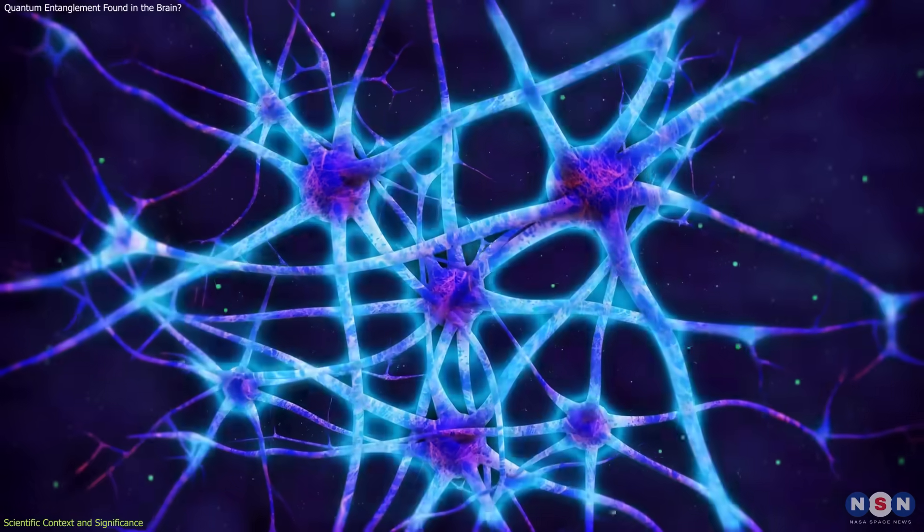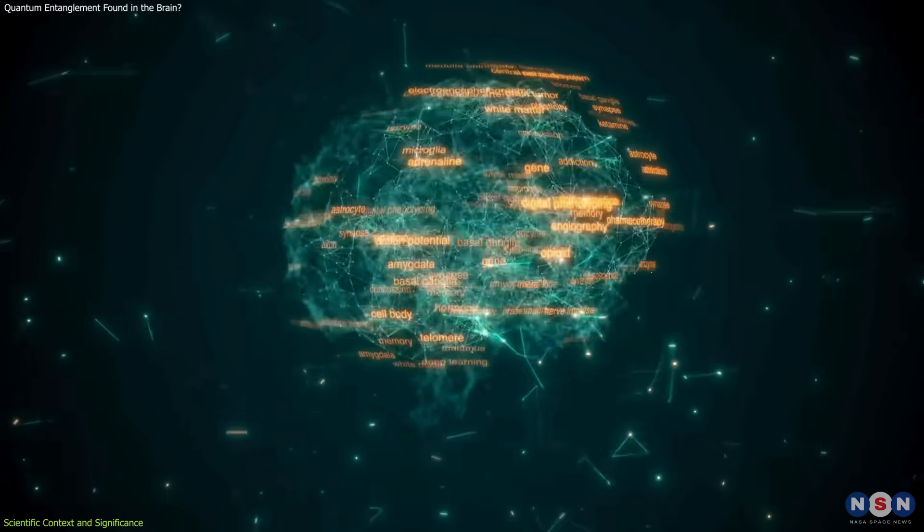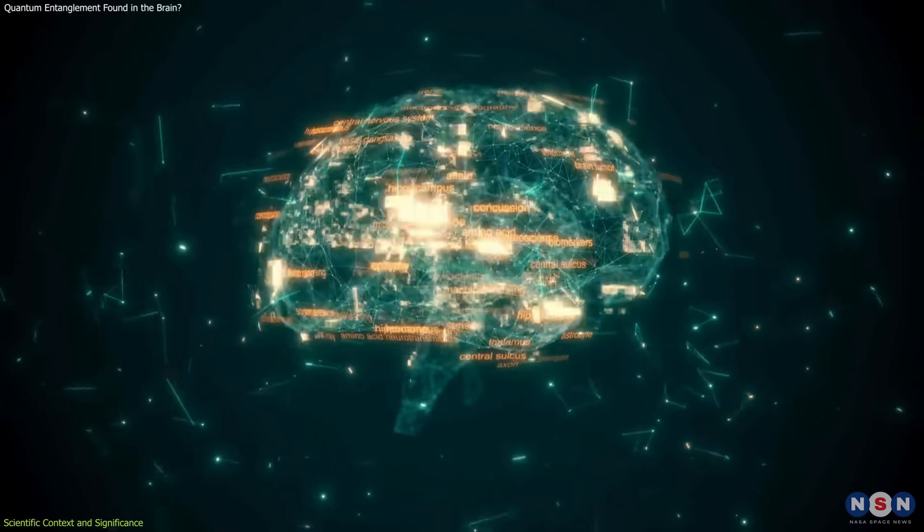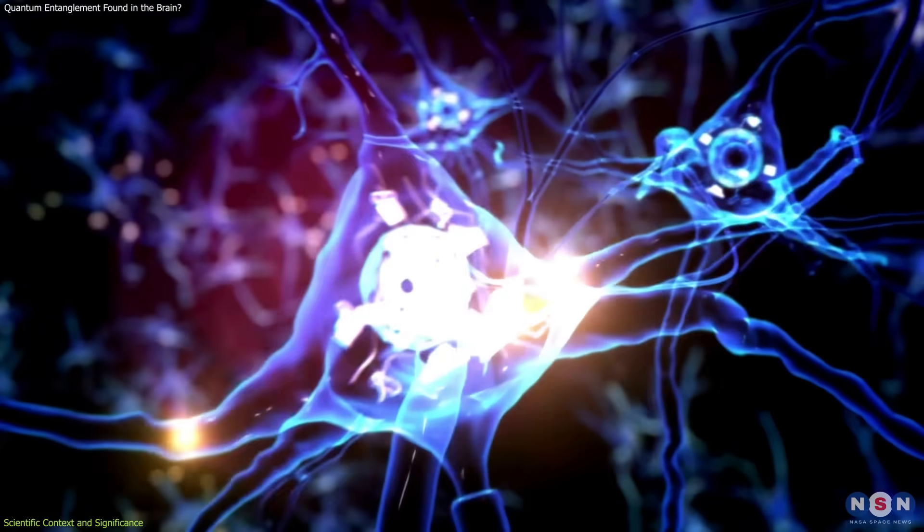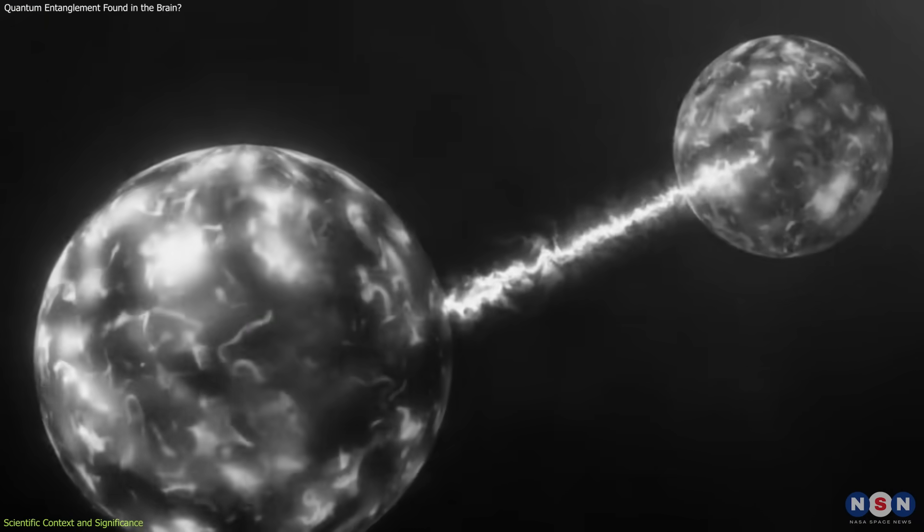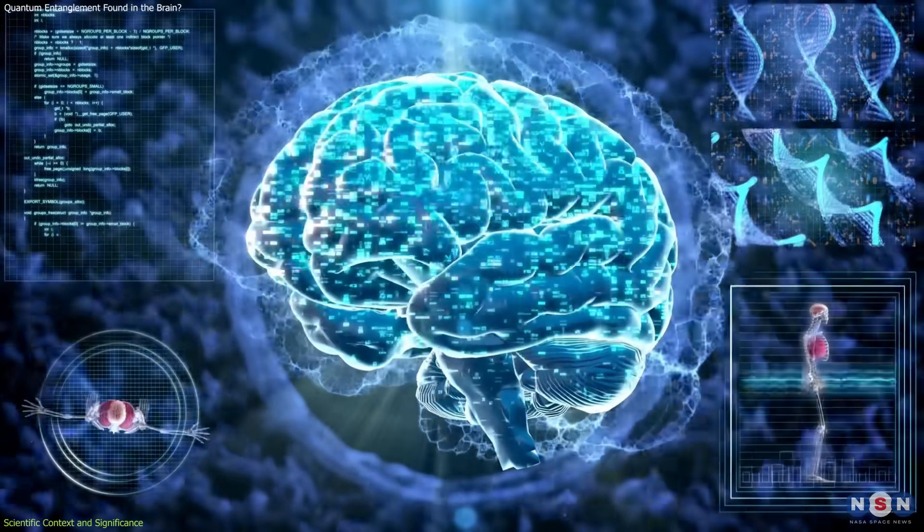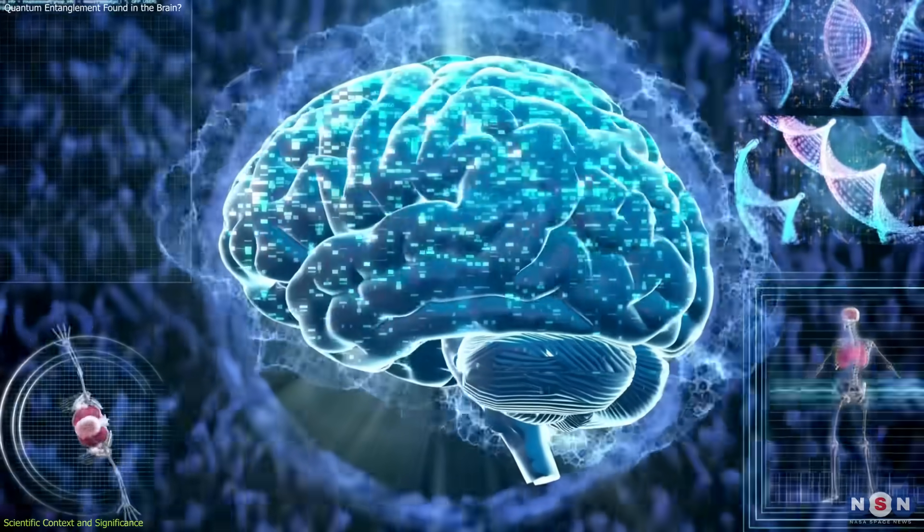The study also addresses one of the long-standing puzzles in neuroscience—how brain regions synchronize their activity at incredible speed. Electrical signals alone don't fully account for this coordination. If entangled photons were assisting in that synchronization, even briefly, it could add an entirely new layer to our understanding of brain communication.